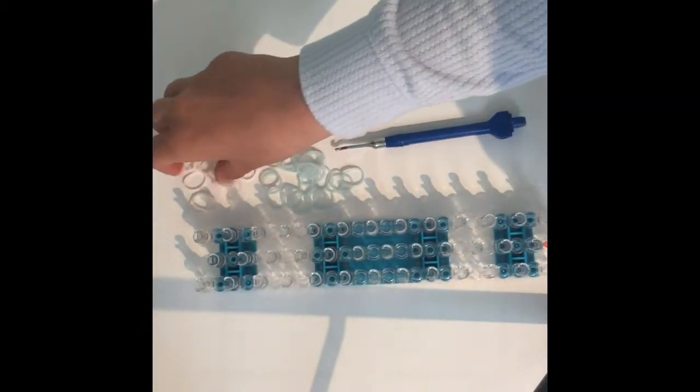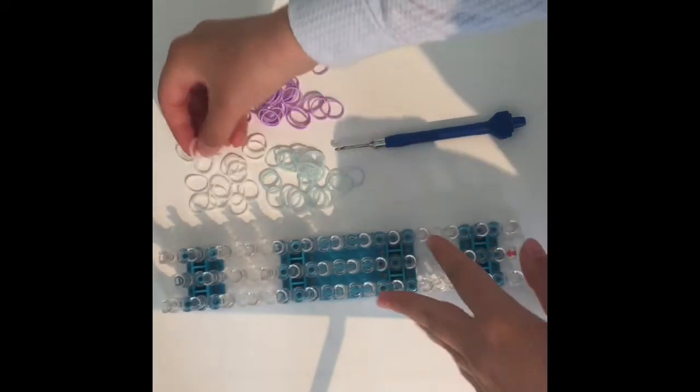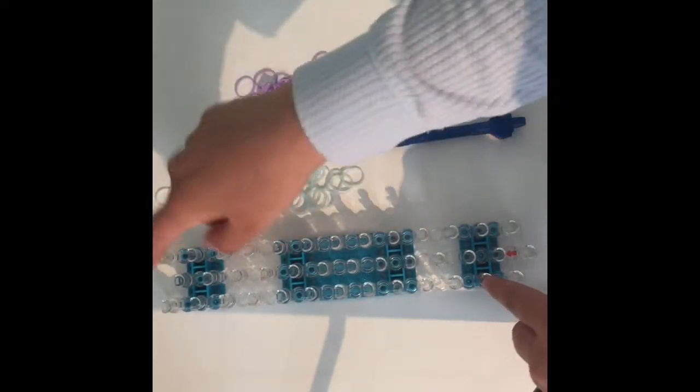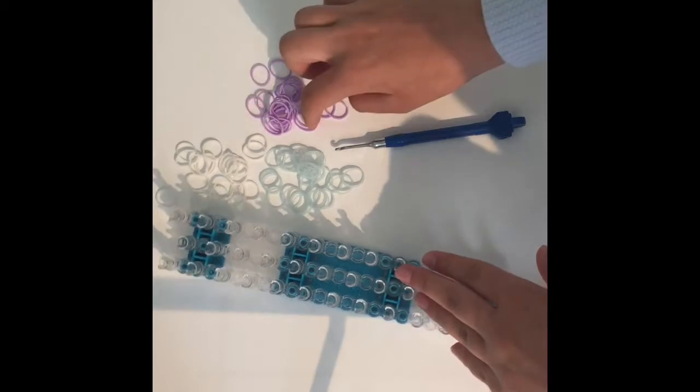You're going to need some white bands for your outside color. You're going to need two colors for the inside.